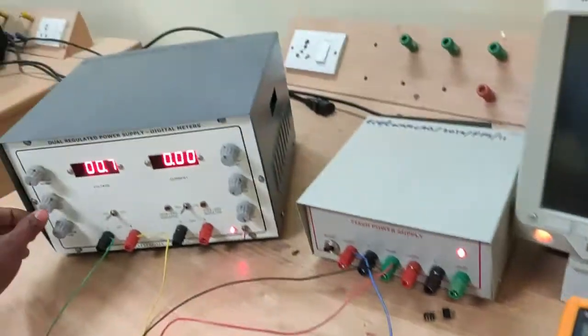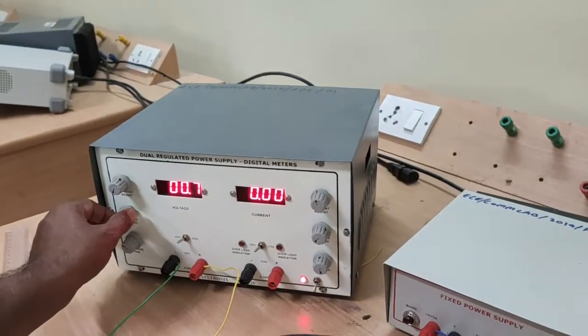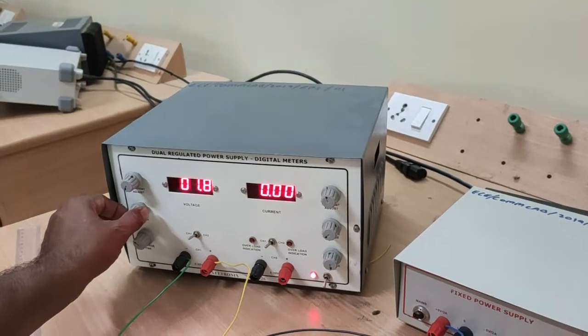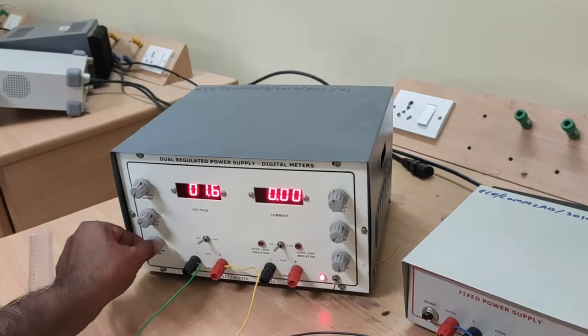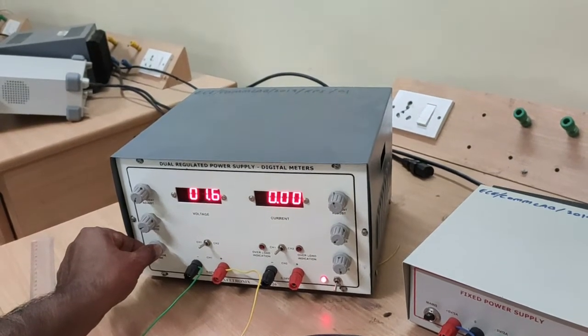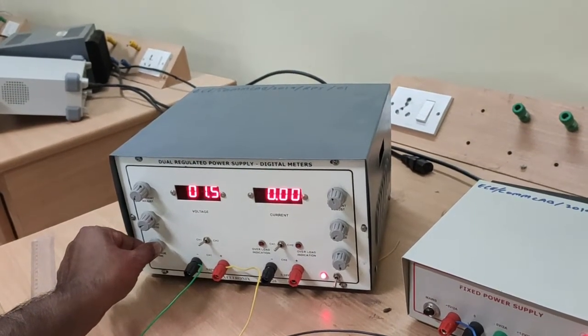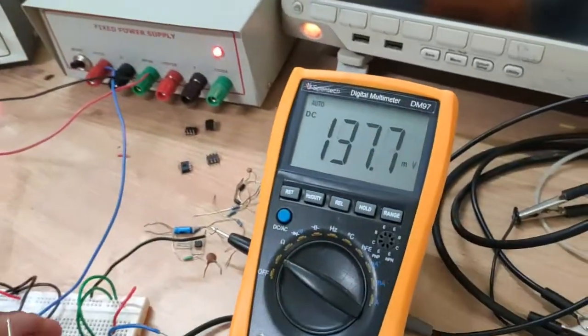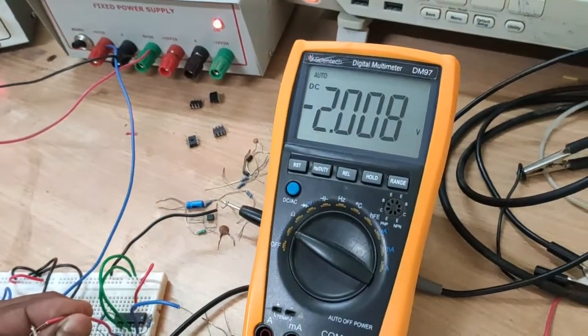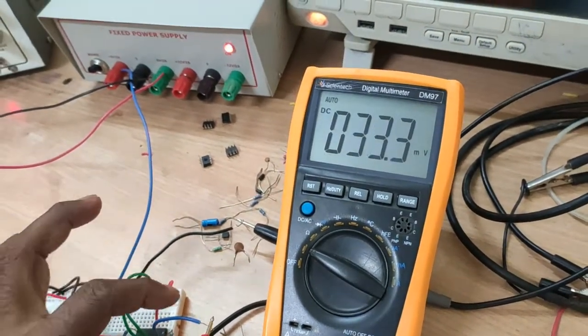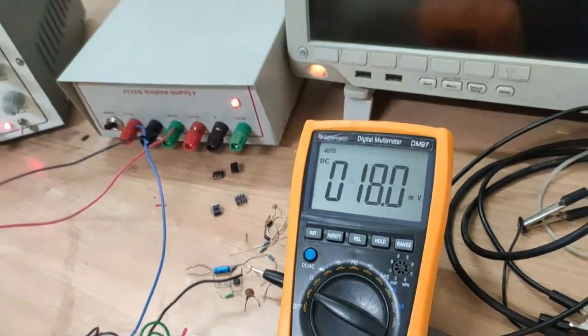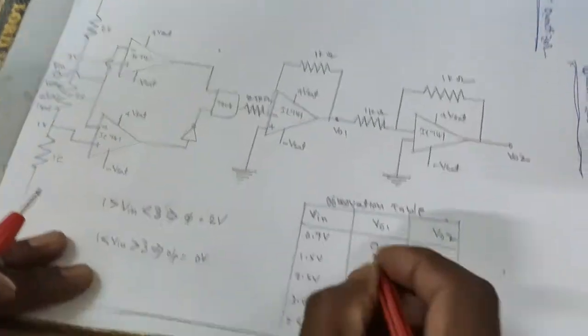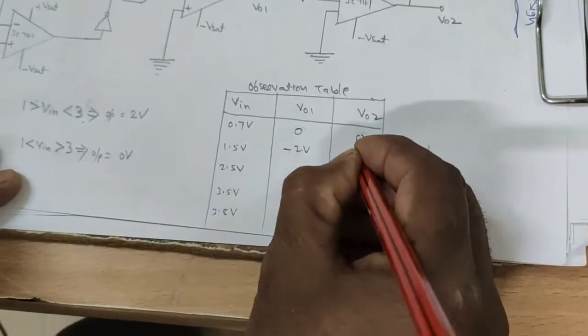Next, increase the V in value up to 1.5 volts. V0 is 2 volts: minus 2 volts and 2 volts.